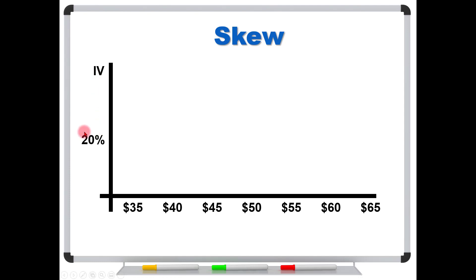Let's say that the stock is currently trading at 20% volatility. If that's true, you would certainly think that all of these strikes would trade at 20%, right? It makes sense — if the stock's trading at 20% volatility and they're all tied to the same stock during the same time, they should all trade at the same volatility. Well, you would think, but welcome to the real world. This is not how they work.